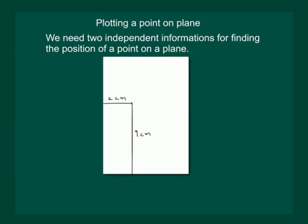This brings us to the conclusion that we need 2 independent informations for finding the position of a point on a plane.